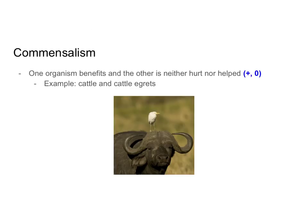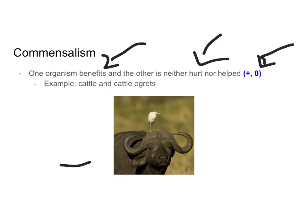The next type of symbiotic relationship is commensalism, where one organism is benefiting and the other is neither hurt nor helped — a positive-neutral relationship. Our example here is cattle and cattle egrets. When cattle walk through tall grasses, they stir up lots of bugs, and the cattle egrets can eat those bugs. So the cattle egret is benefiting from the relationship, but the cattle are neither hurt nor harmed.